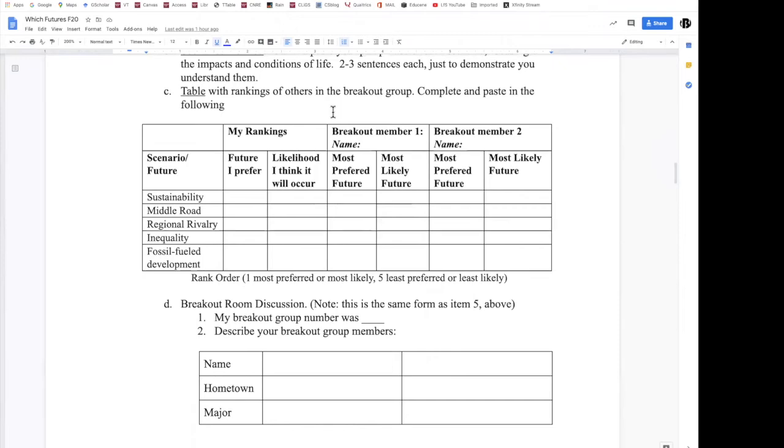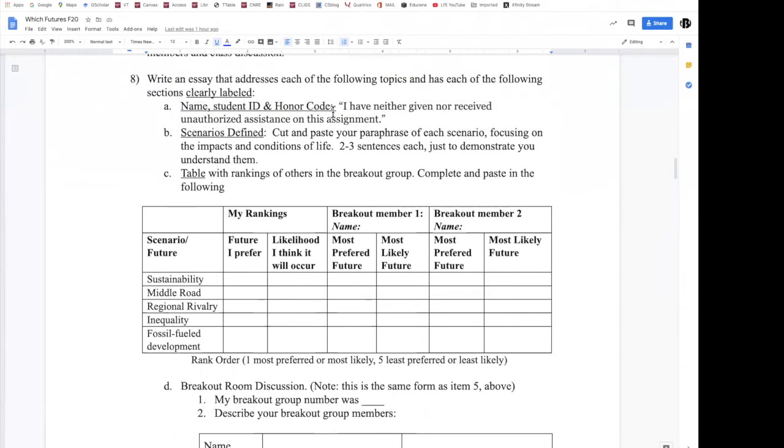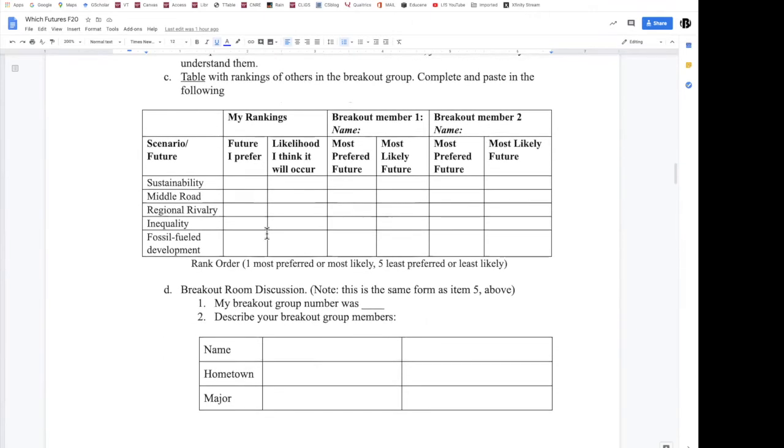And then do the assignment, which is to fill out this form pretty much just like it's listed here. You can download this whole thing, you can cut it, paste it into Word, or you can work right on Google docs. If you want to make a copy of it and use it there, what are your rankings? What are your breakout group members rankings?